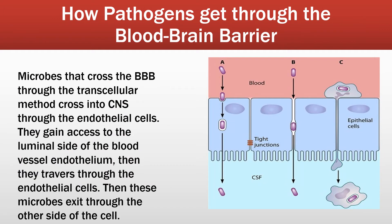Here is how pathogens get through the blood-brain barrier. Microbes that cross the BBB through the transcellular method cross into the CNS through the endothelial cells. They gain access to the luminal side of the blood vessel endothelium, then traverse through the endothelial cells, and exit through the other side. Here is the tight junction and the endothelial cell referenced in the prior slide.